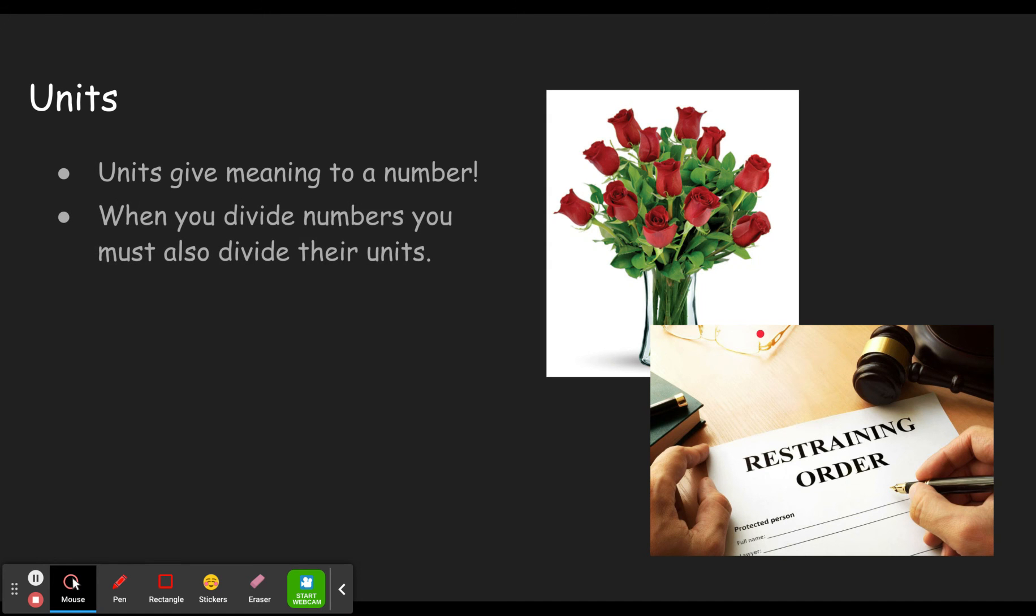So as we do slope and you divide the rise by the run, the change in y over the change in x, you will now have units associated with those numbers. So you will not only divide the numbers but you will also divide the units. And if those units have some parts that are the same, they can cancel out, just like if you had x divided by x in an algebra equation.